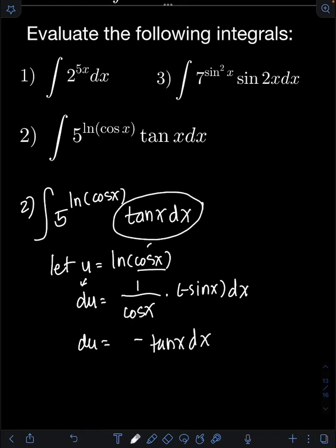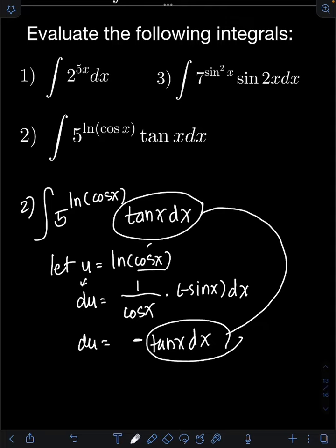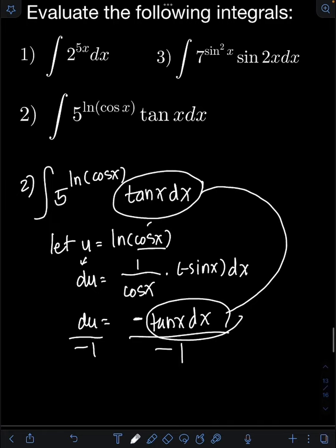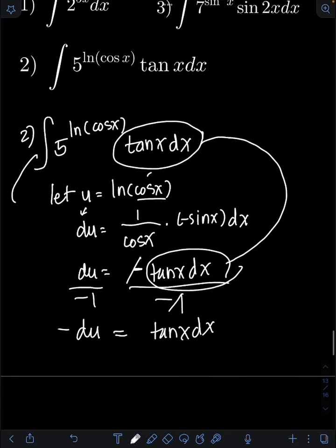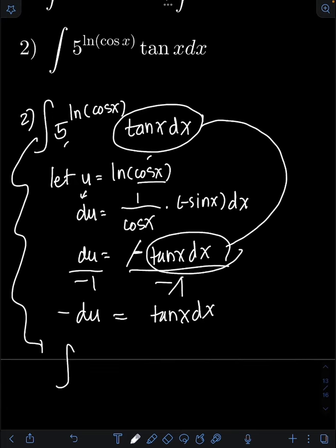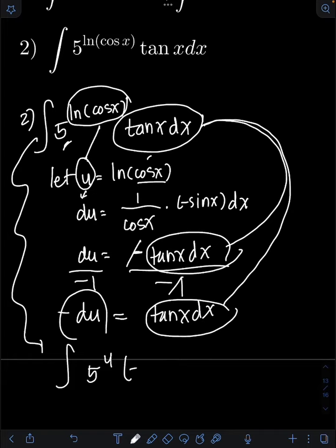We have created the tan x dx term from the original integral, but with an extra negative coefficient which we don't need. Dividing both sides by negative 1, we get negative du equals tan x dx. Substituting, the base 5 raised to ln cos x becomes 5 raised to u, and tan x dx equals negative du.